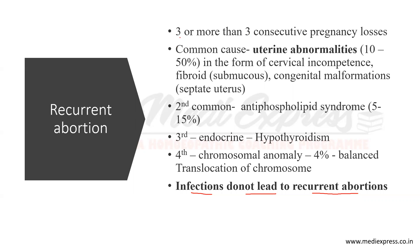Three or more than three consecutive pregnancy losses defines recurrent abortion. The most common cause is uterine abnormalities, around 10 to 50%, in the form of cervical incompetence, submucous fibroid, and congenital malformations such as septate uterus. The second common cause is antiphospholipid syndrome, around 5 to 15%. Third is endocrine causes — hypothyroidism. Fourth is chromosomal abnormality, around 4%, where a balanced translocation of chromosomes leads to recurrent abortion.